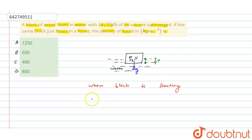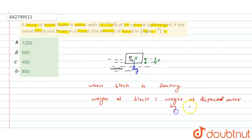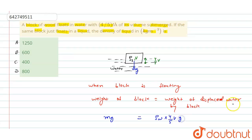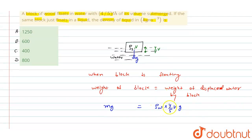The floating condition states: weight of block equals weight of displaced water. So mg equals the weight of displaced water. Four-fifths of the volume of water has been displaced, so the weight of displaced water is ρw × (4/5) × V × g.